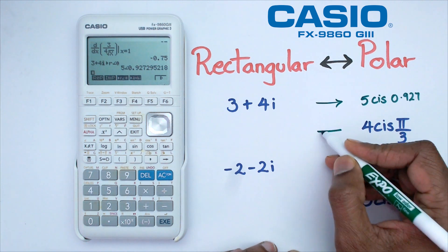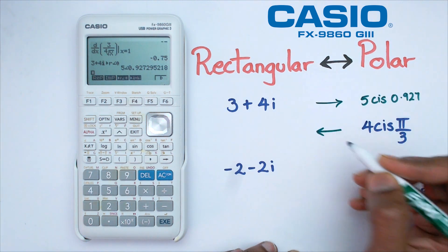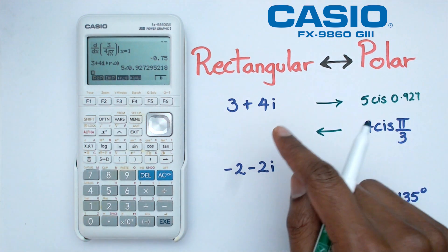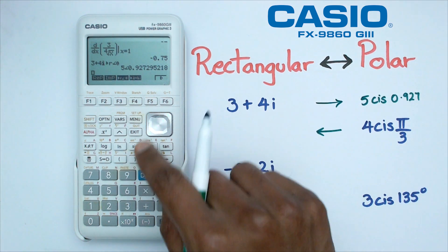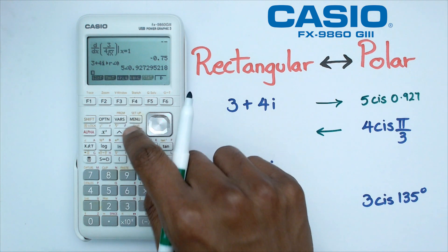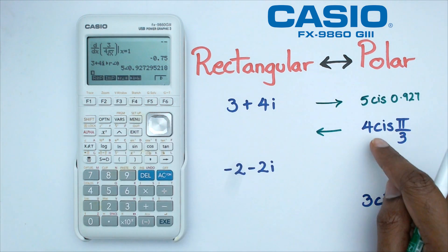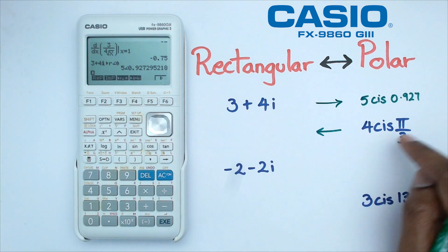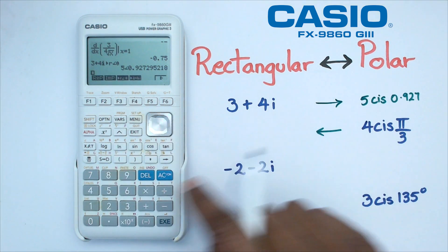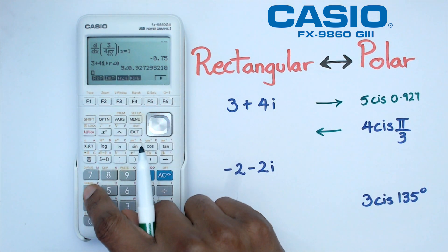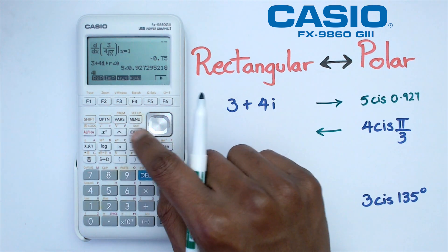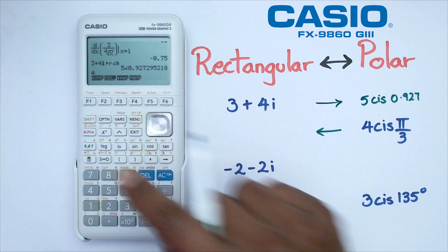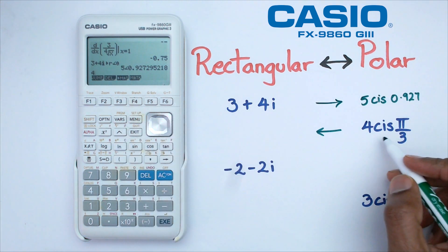Now let's look at going backwards. If I want to do 4 cis pi over 3 and convert that into rectangular form, I'm going to exit this and then enter 4 cis pi over 3 into the calculator. So we're going to click on 4 and now we need to figure out what the cis button is.